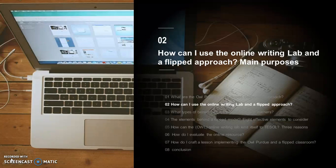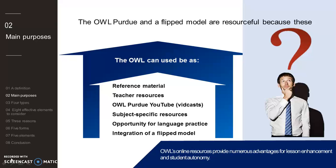For the second question — how could we use the online writing lab and a flipped model? — I will be discussing some main purposes. The OWL can be used as reference material both inside and outside the classroom setting, and its collection of online resources offers a wide and wealthy range of writing materials that address a variety of topics.